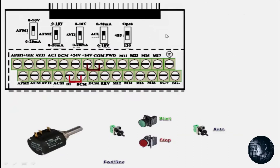Here we have the drive terminals. We are using a potentiometer for frequency reference, a selector switch for reverse, and for start and stop we have used NO and NC pushbuttons in a 3-wire configuration. There is also a selector switch for auto/manual selection.